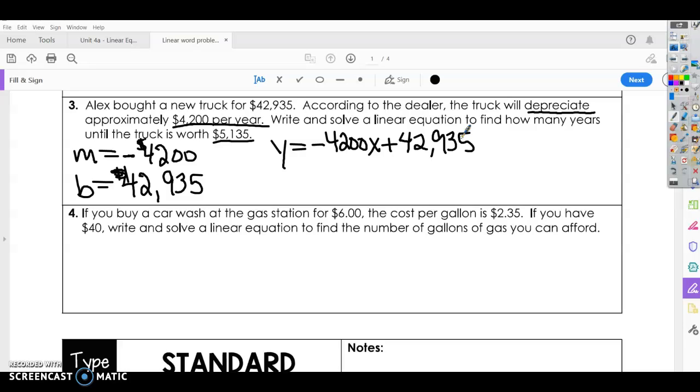Write and solve a linear equation to find how many years. Years is your independent variable. So we have the dependent, so we're going to use the dependent number here as what we want it to be the final value. So 5,135 equals negative 4,200x plus 42,935.